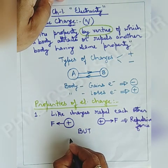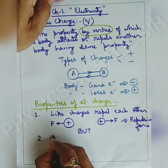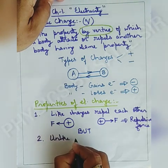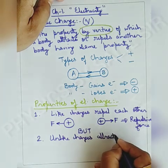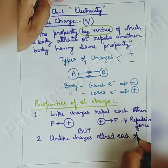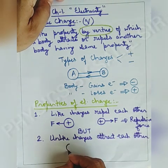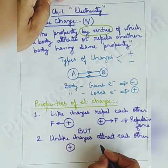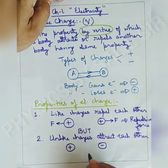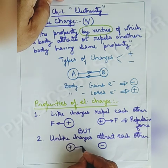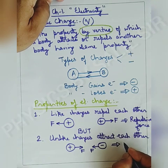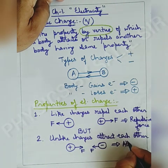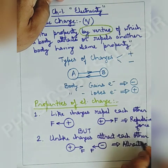Second property: unlike charges attract each other. If there is a positive charge and a negative charge is brought near to it, these two charges get attracted towards each other. The F here represents attractive force.